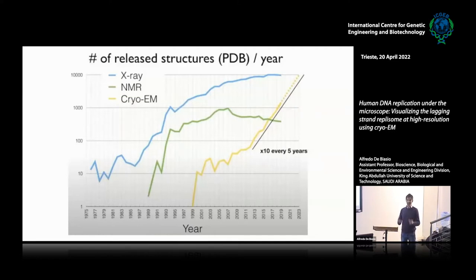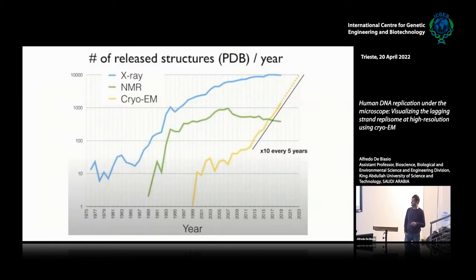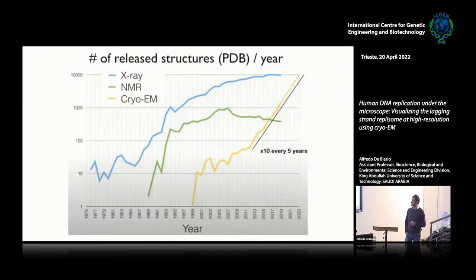The explosive impact of CryoEM is documented in a graph showing the number of structures deposited in the protein databank over time — structures determined by X-ray crystallography, NMR, or CryoEM. Starting from around 2013, when direct electron detectors became available for CryoEM, you see an exponential increase in the number of structures determined by CryoEM, whereas the number determined by the sister techniques plateaued.